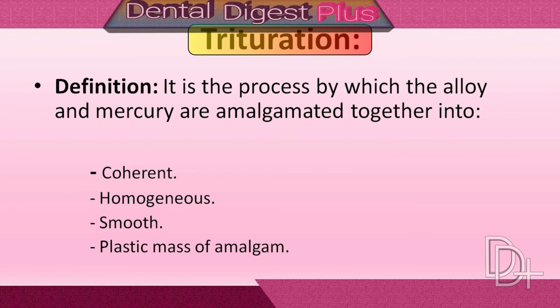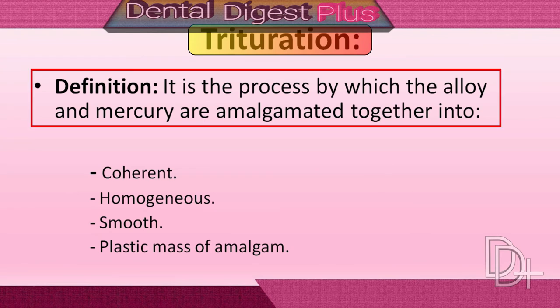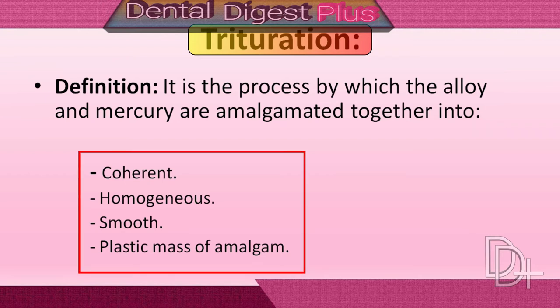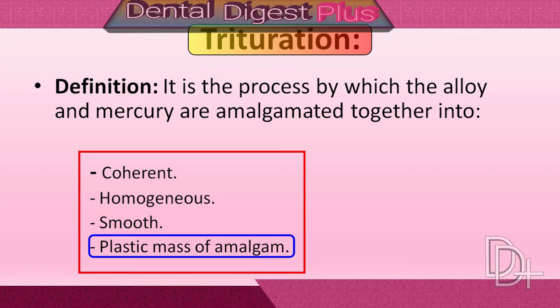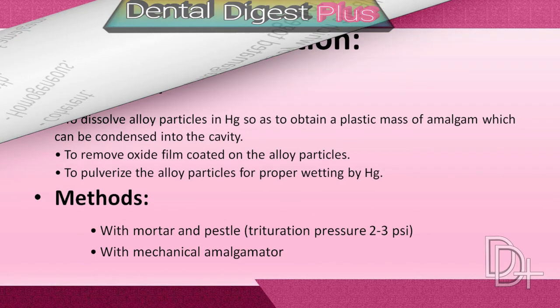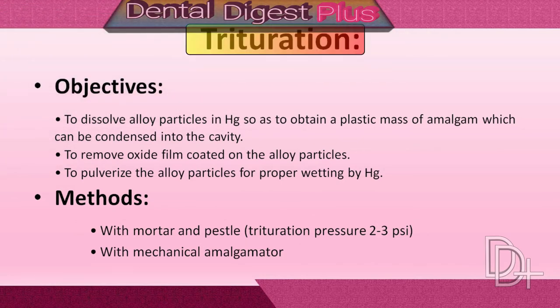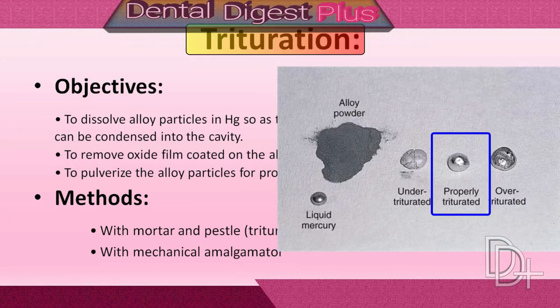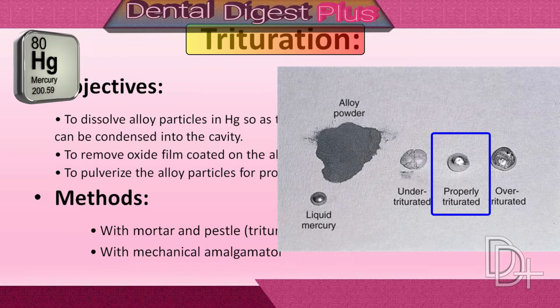Trituration is the process of mixing the amalgam alloy particles with mercury. The amalgam mix should be coherent, homogeneous, and smooth, and should have a plastic mass consistency. The purpose of trituration is to provide proper amalgamation of the mercury and alloy.